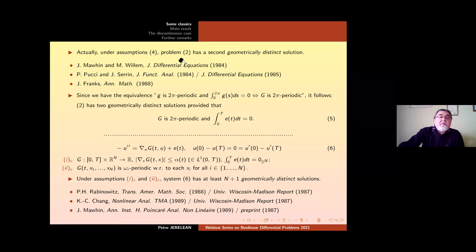Okay. So we have a second geometrically distinct solution for the one-dimensional periodic problem 2. If you want to pass to systems, then we have to make some remarks. Since we have the equivalence, g is 2π periodic and this integral vanishes is equivalent with the primitive capital G is 2π periodic, it follows that 2 has two geometrically distinct solutions, provided that capital G is 2π periodic and the forcing term has null mean.